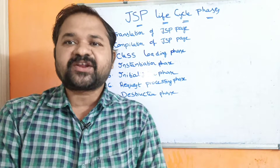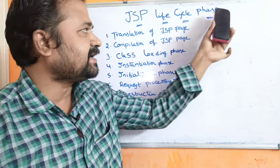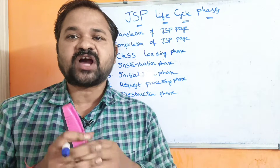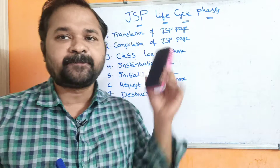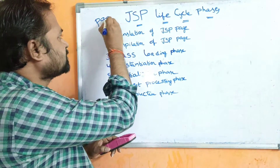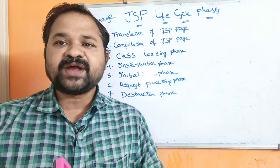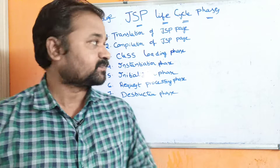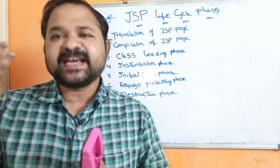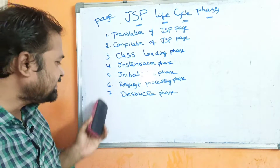In this video, we are going to discuss about JSP Lifecycle phases. JSP stands for Java Server Pages. JSP is mainly useful in order to develop web applications. The JSP Lifecycle is executed using these 7 phases.